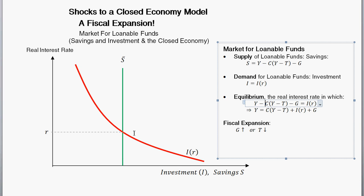We'll have an equilibrium real interest rate where the supply of loanable funds equals the demand for loanable funds. Since the supply of loanable funds has all fixed inputs, and investment is just some function of the real interest rate, the real interest rate adjusts to equilibrate the market.